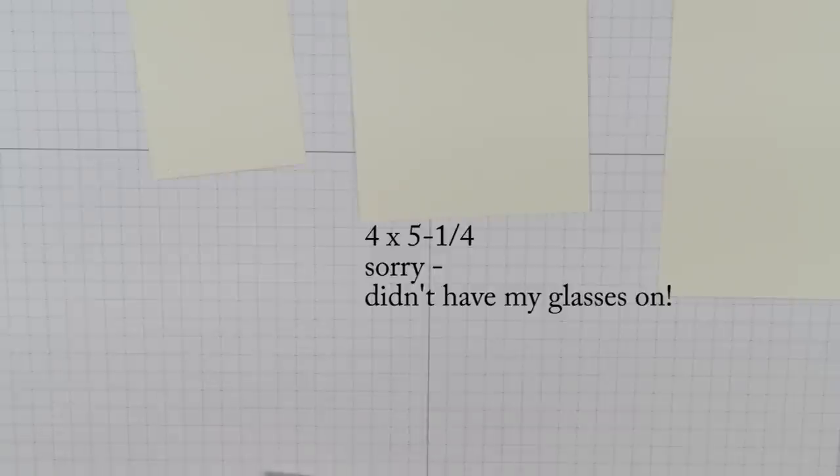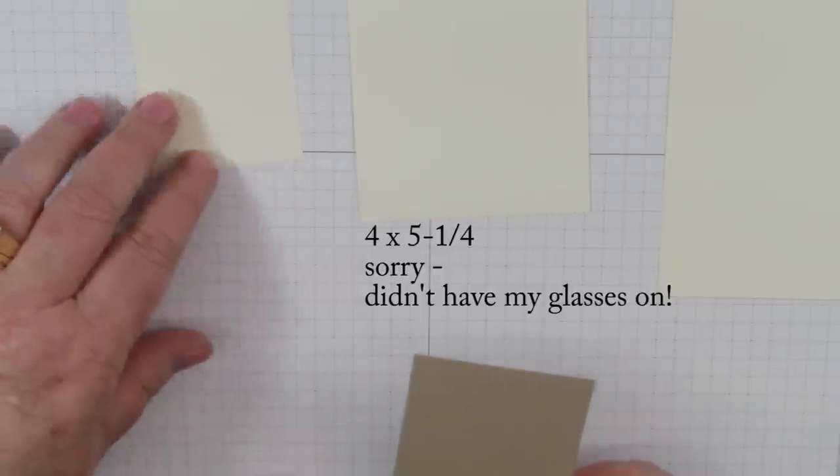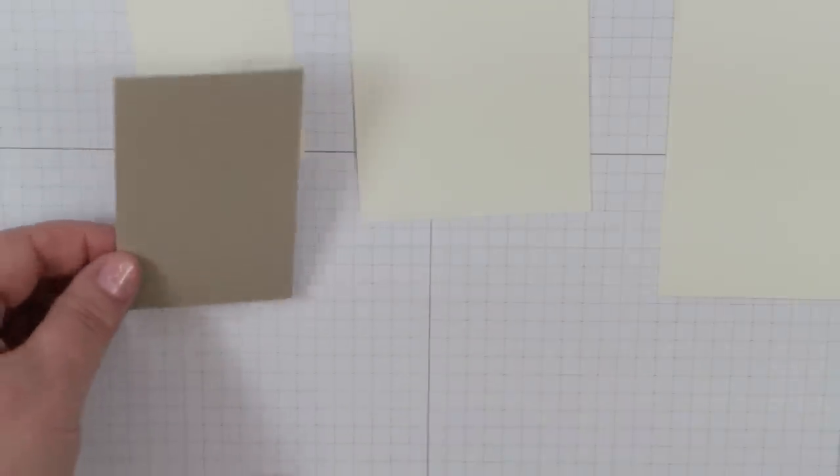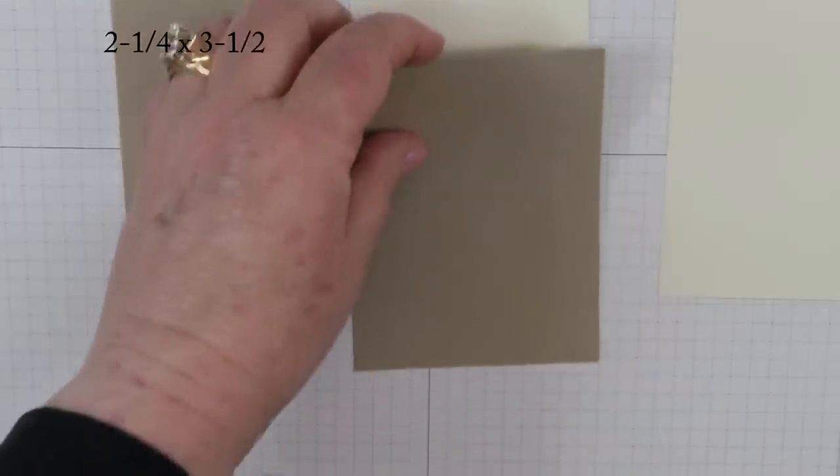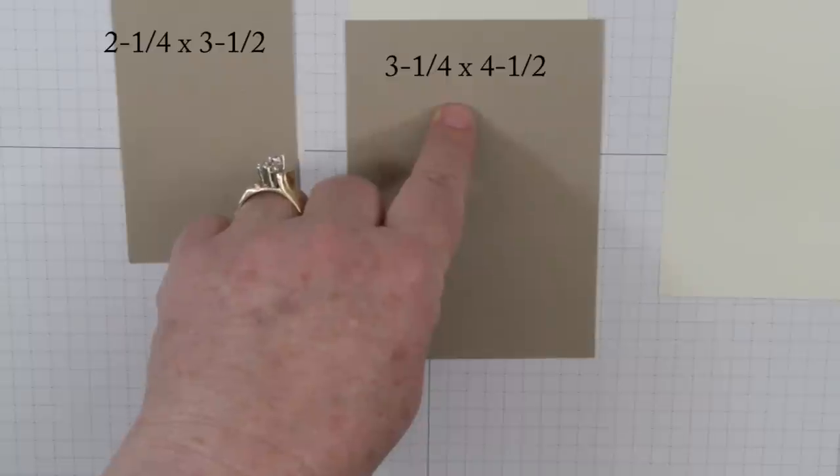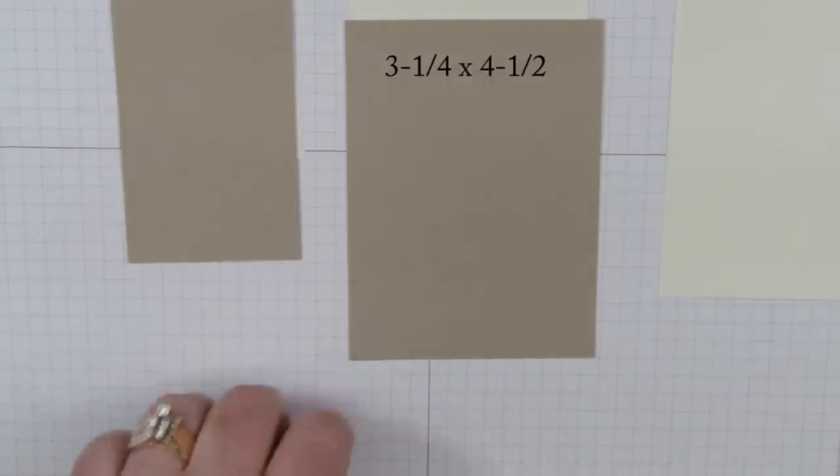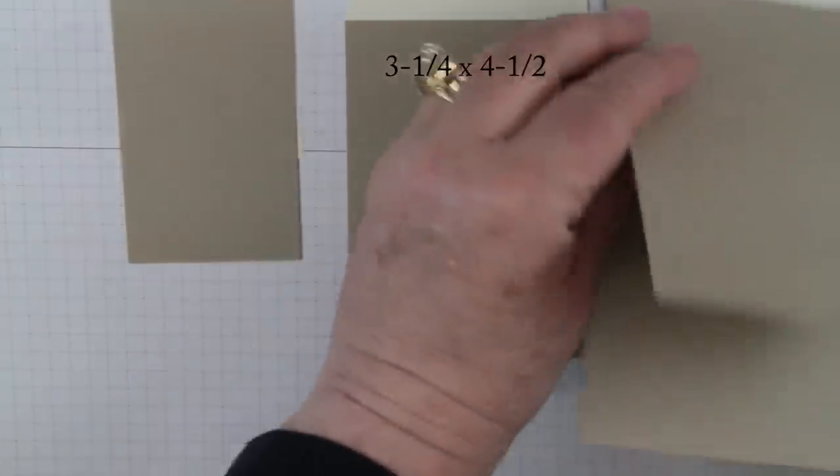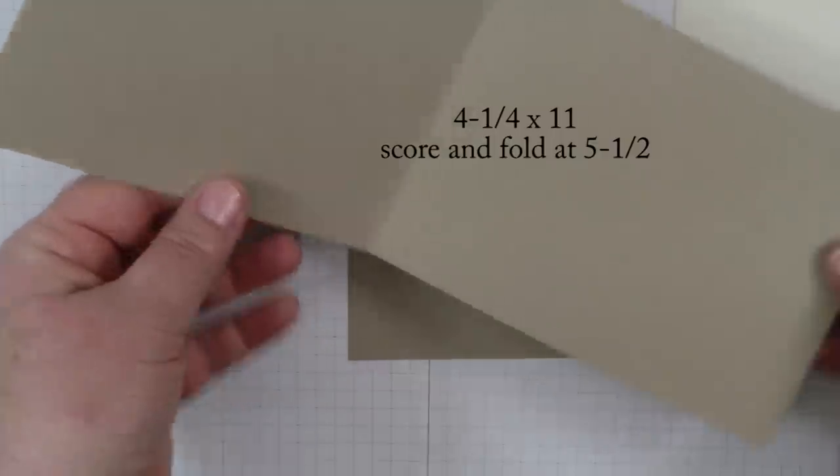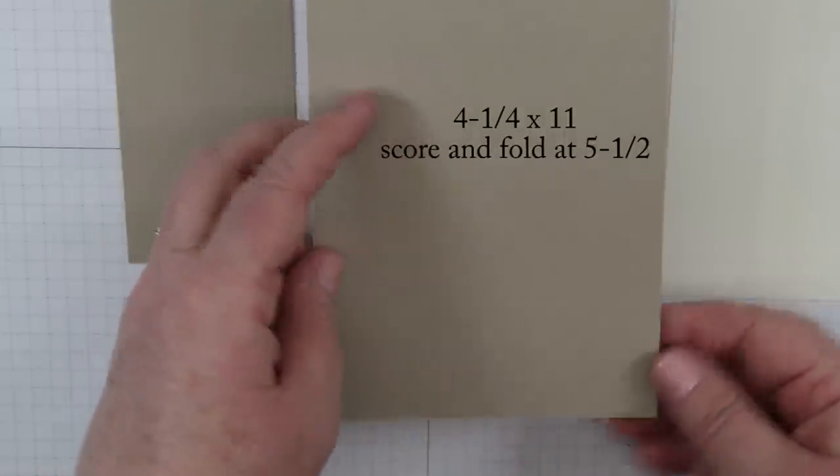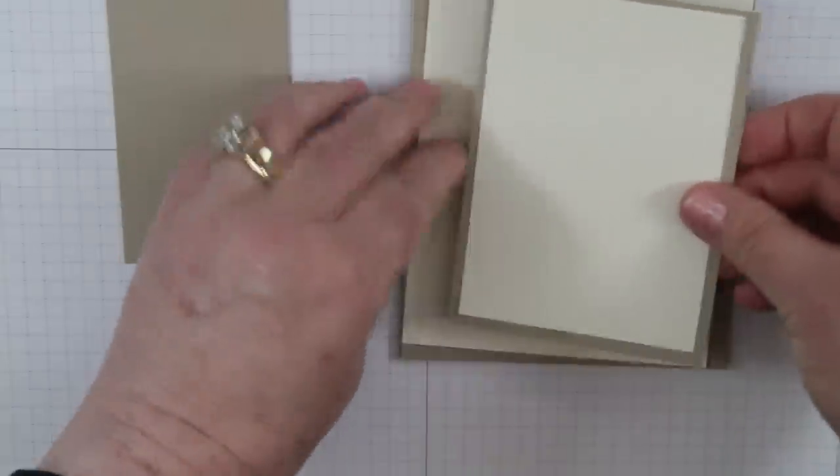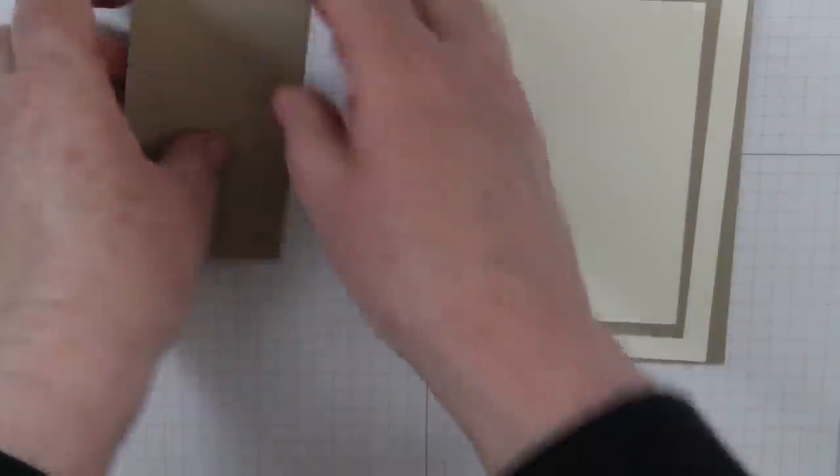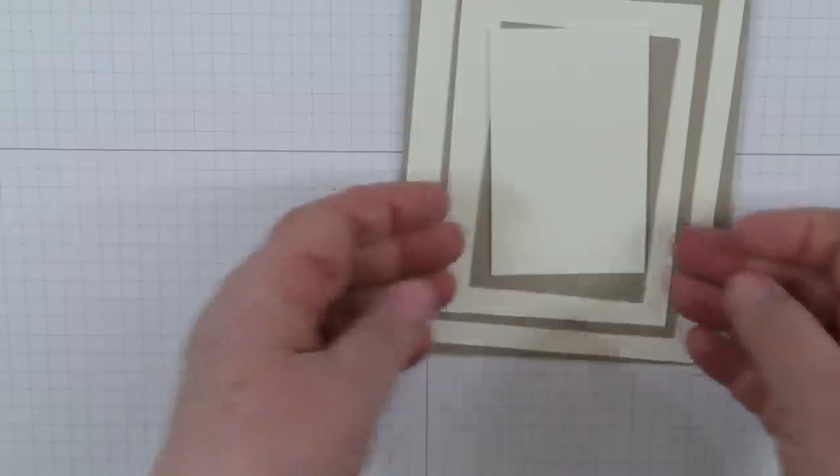You're going to need a mat that goes underneath each one. I did this one in Crumb Cake. This one is 2 and 1/4 by 3 and 1/2. This one is 3 and 1/4 by 4 and 1/2. This one is actually the card base, 4 and 1/4 by 11, scored and folded at 5 and 1/2. These will layer together when we're finished.